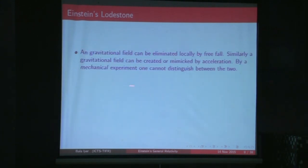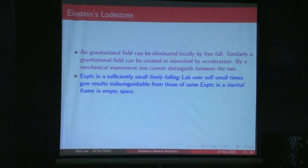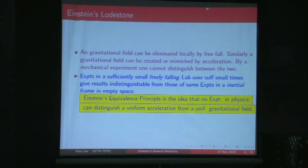The first step in the formulation of general theory of relativity is what we call the equivalence principle. The statement is that if you have a gravitational field, by falling freely you can eliminate that gravitational field. On the other hand, you can mimic a gravitational field in free space far away from all bodies by going to an accelerated frame. By a mechanical experiment, you cannot distinguish between these two. Einstein generalized this idea from mechanical experiments to all laws of physics.